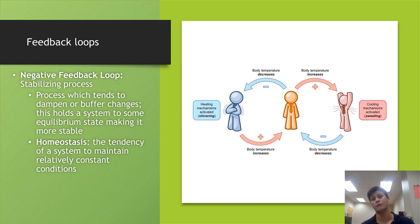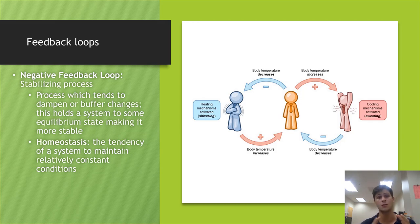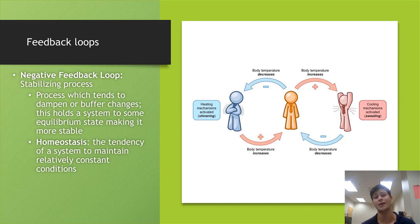When we shiver, we convert kinetic energy into thermal or heat energy and begin to heat our body back up. Your body is a system at a nice stable temperature; you walk outside on a winter day, lose heat, shiver, convert kinetic energy to thermal energy, and heat back up, bringing your body back to normal. This is another built-in negative feedback loop.